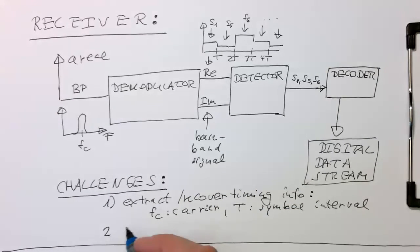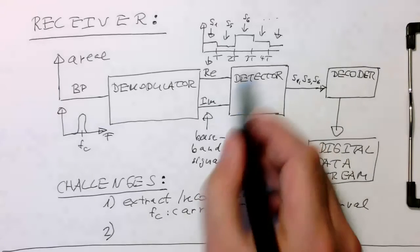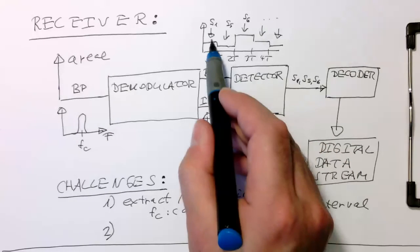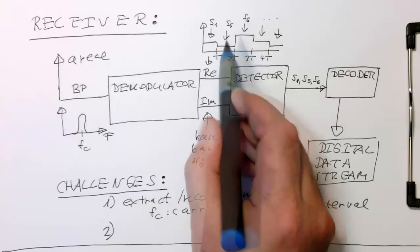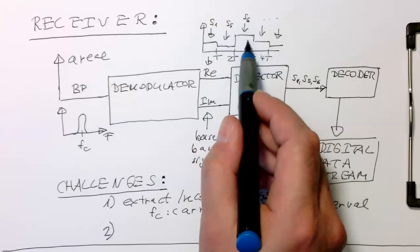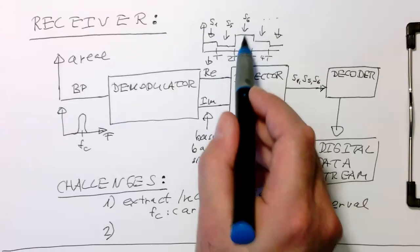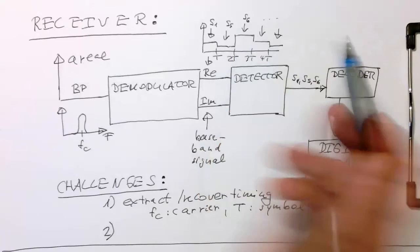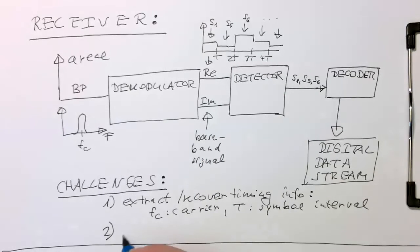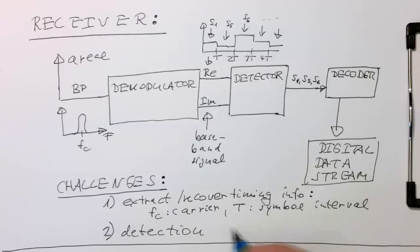So then the second challenge is also related to this block here, this detector. So I've drawn here just naively here these arrows in the middle and saying this gives us symbol 1, symbol 5, symbol 6, but this is very often non-trivial task to decide this is symbol 6, and not maybe symbol 5. So the other challenge is the actual detection of the symbols.